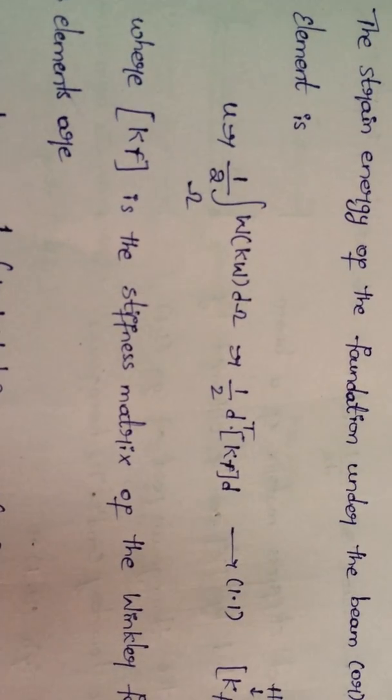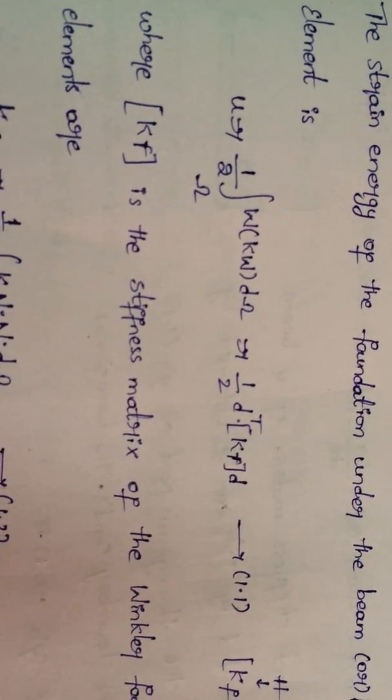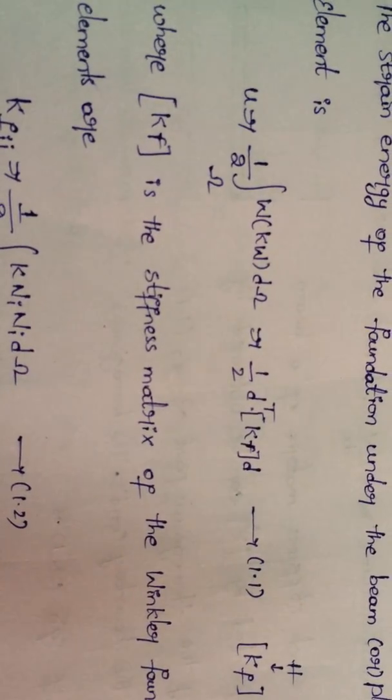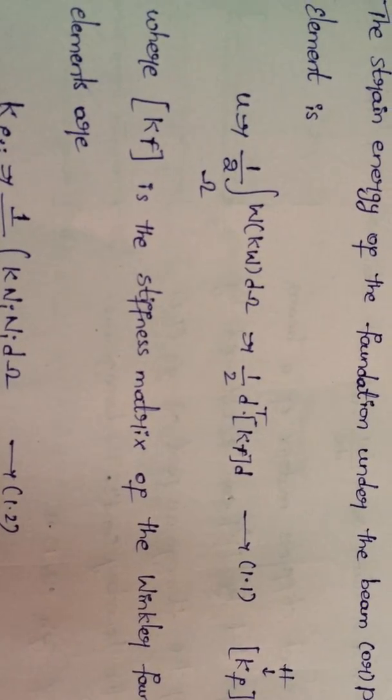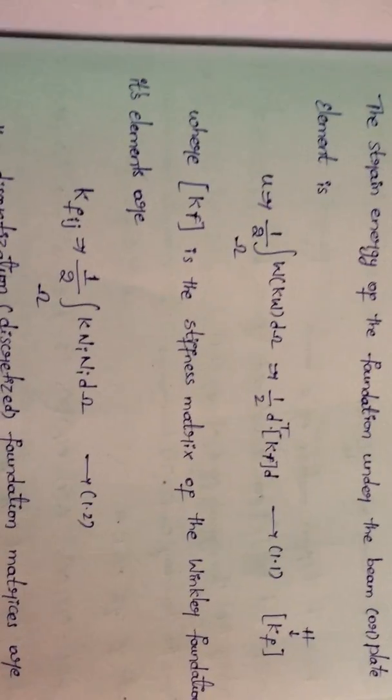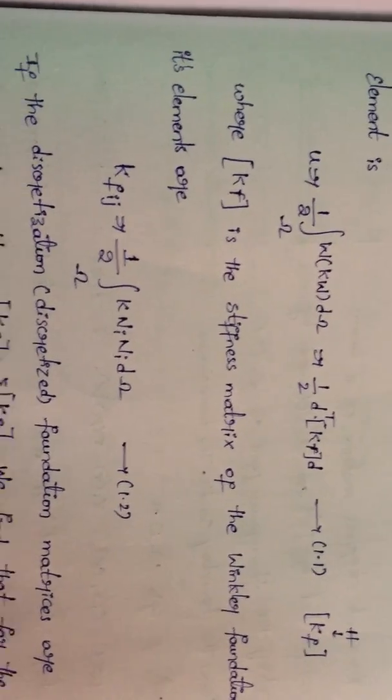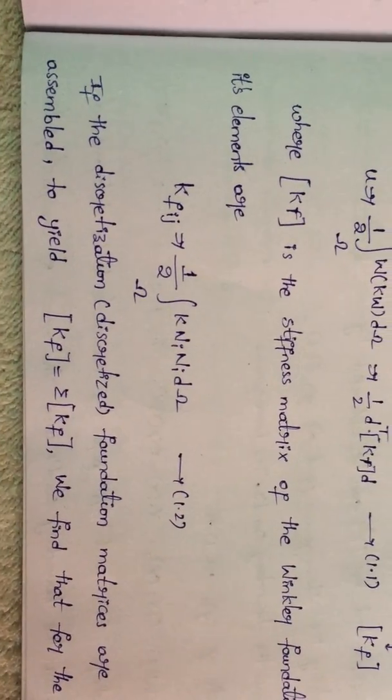Equal to half into d transpose into k into d, so that k f is the stiffness matrix of the Winkler's foundation elements. k f i j equal to half into integration of omega k n i into n i into d omega.